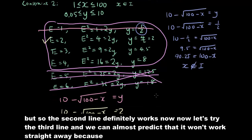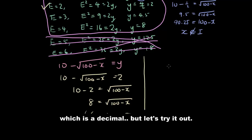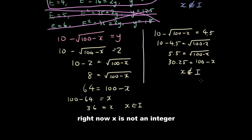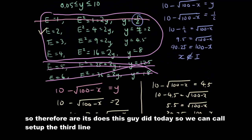Now the third line — we can almost predict it won't work because y = 4.5 is a decimal. Let's confirm: 10 − √(100 − x) = 4.5, so 5.5 = √(100 − x). Squaring: 5.5² = 30.25, which means x would be a decimal. X is not an integer, so this option is discarded.